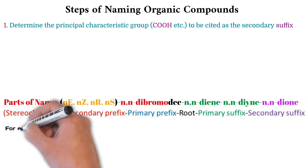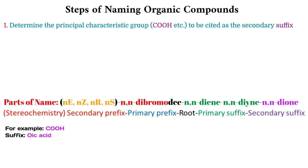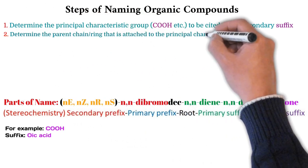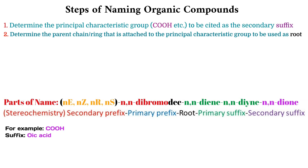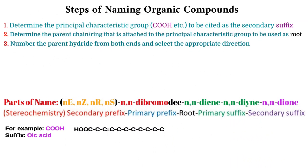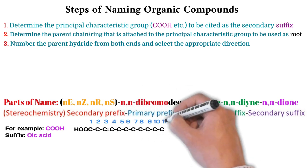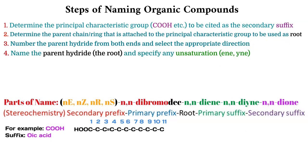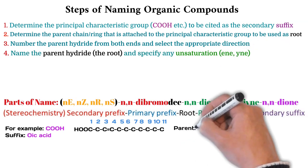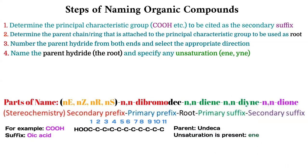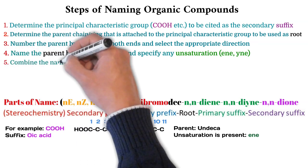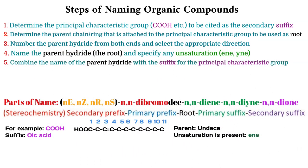The second step is to identify the parent hydride to be cited as the root in the IUPAC name. In the third step, number the parent hydride from both ends and select the most appropriate direction. Name the parent hydride based on the number of atoms it contains, and determine if unsaturation is present or not. For example, the given structure's root name is 'undec' because it has 11 carbons. Also it has a double bond, therefore the primary suffix will be '-ene'. Now combine all the main three parts: root name, primary suffix, and secondary suffix — which in this example are 'undec', 'ene', and 'oic acid'.